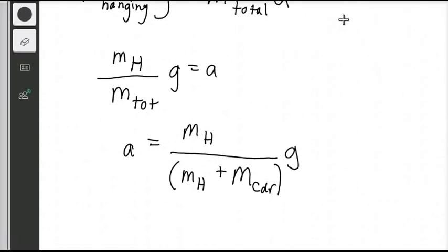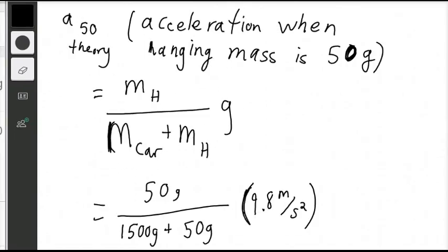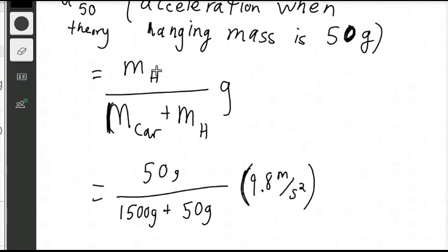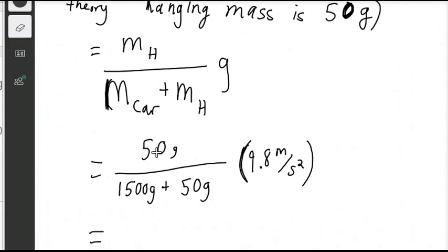Let's plug in numbers. So the acceleration, when the hanging mass is 50 grams, theoretically, is the formula that we just proved. Plugging in 50 grams as the hanging mass, and 1500 grams as the mass of the car, multiplied by 9.8.